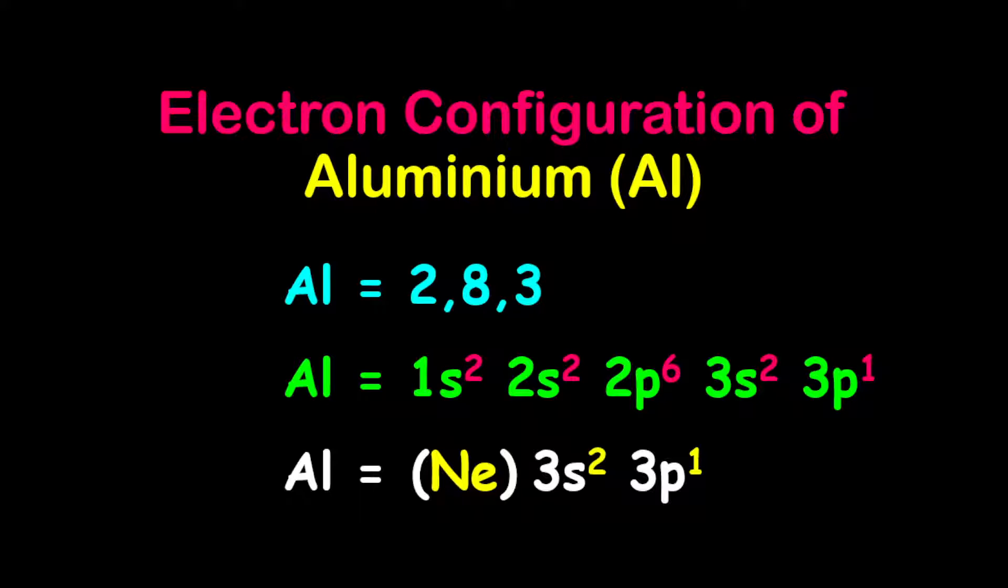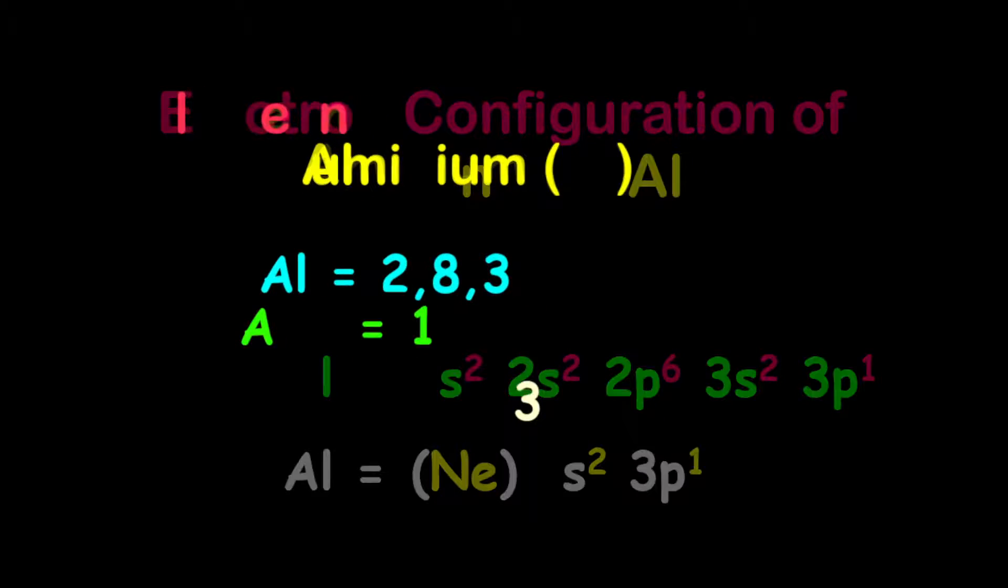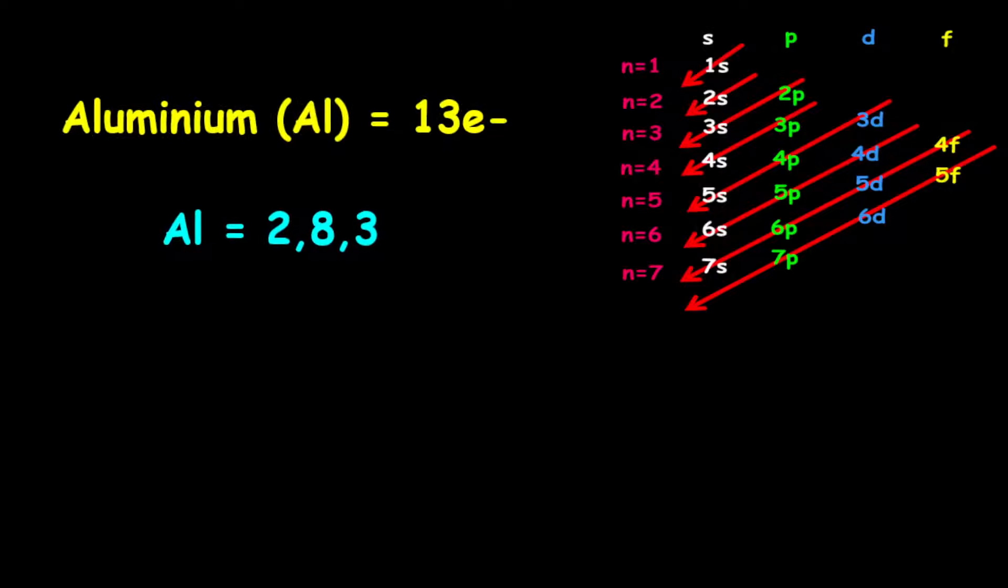The electron configuration of aluminum. Aluminium has 13 electrons.